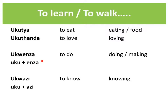For example, 'enza' means 'to do'. If we add 'oku' to the front of that, it becomes 'ukwenza', and again it can make up a noun meaning 'doing' or 'making'. Then we have the verb 'azi' — also an exception starting with a vowel. 'Oku' plus 'azi' makes 'ukwazi', which means 'to know'. It can also be used as a noun, where 'knowing' would be 'ukwazi'.